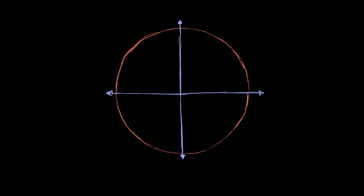Let's explore the unit circle in a little bit more depth. We'll start with some angle theta, and for the sake of this video, we'll assume everything is in radians. This angle right over here we would call theta.